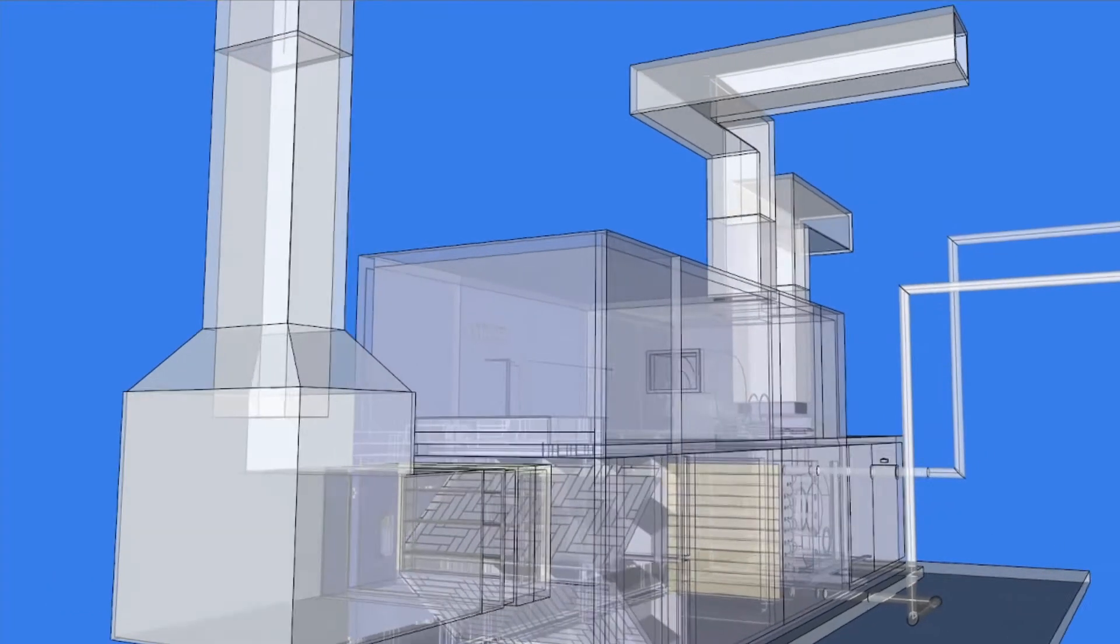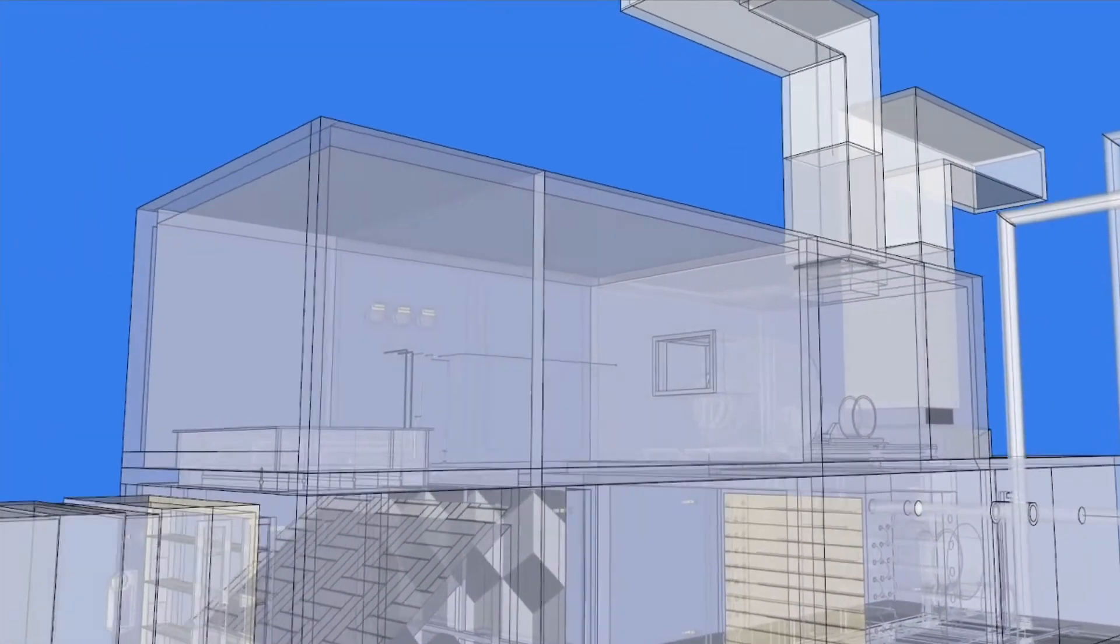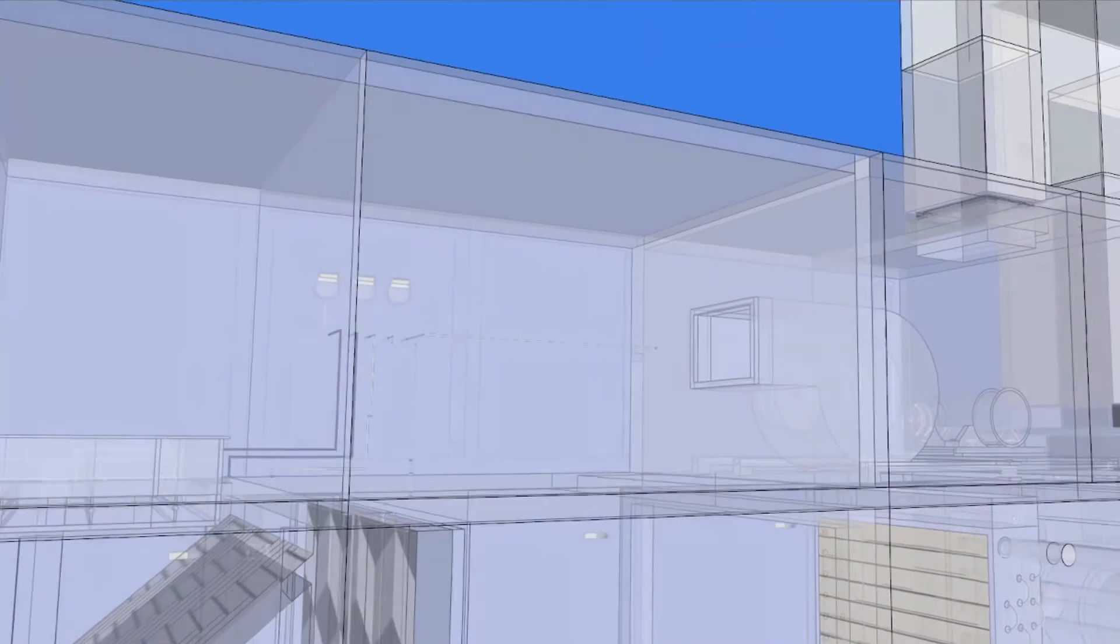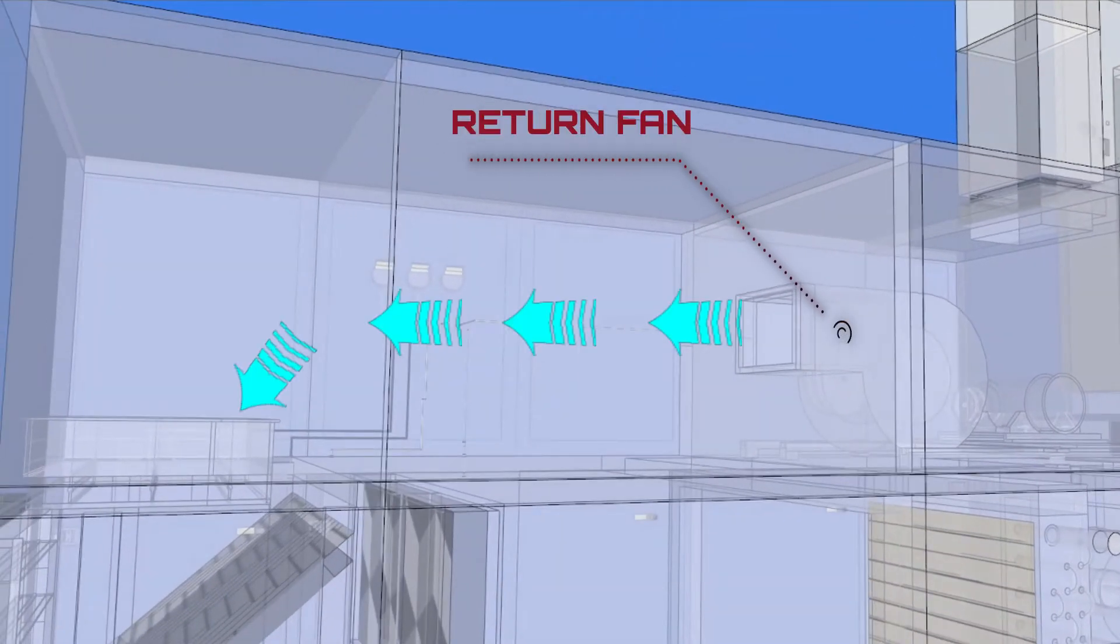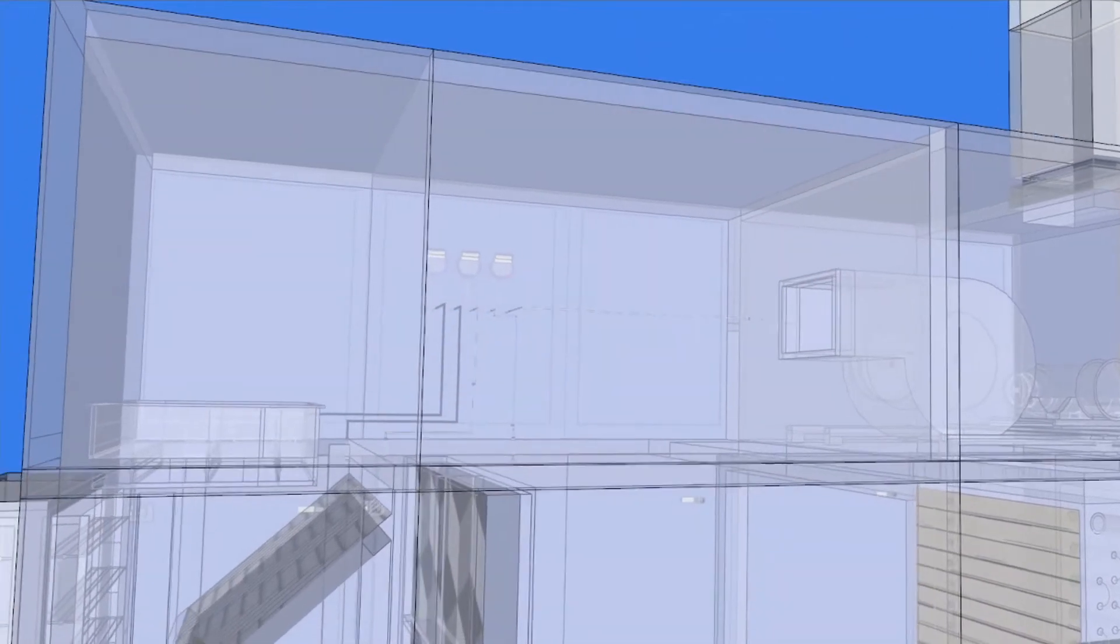The return air fan ensures that the proper volume of air returns from the conditioned space. It prevents excess pressure when economizer cycles introduce more than the minimum quantity of outside air.